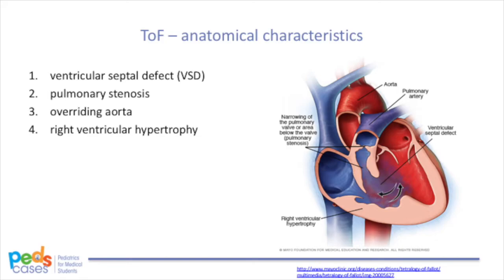Let's review what we would expect on history and physical exam for an infant with Tetralogy of Fallot. Tetralogy of Fallot is often diagnosed prenatally. However, when it is not, it commonly presents within the first few months of life as a systolic murmur with or without associated hypercyanotic spells — also called TET spells — and low oxygen saturation, just like Josh. TET spells can occur when there is increased right ventricular outflow tract obstruction or pulmonary vascular resistance, or when there is decreased systemic vascular resistance. These promote more shunting from the right ventricle to the left ventricle, causing more mixing of oxygenated and deoxygenated blood, which is then pumped into the systemic circulation and leads to cyanosis.